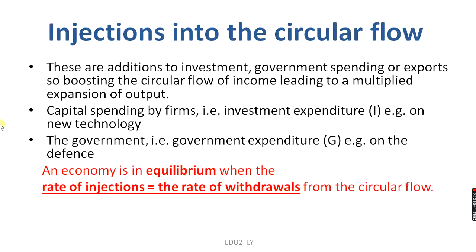Next are injections into the circular flow. Injections are additions — through investment, government spending, or exports — that boost the circular flow of income, leading to a multiplied expansion of output. Just as leakages are withdrawals from the circular flow, injections are additions to it. For example, capital spending by firms, such as investment expenditure on new technology, is an injection into the circular flow. Another type of injection is government expenditure, represented by G — for example, government spending on defense.